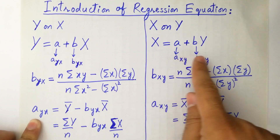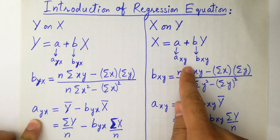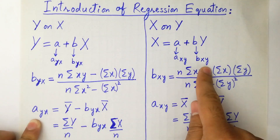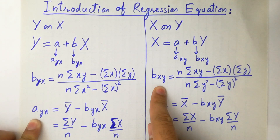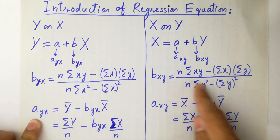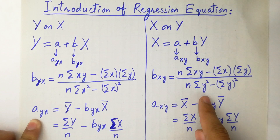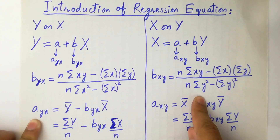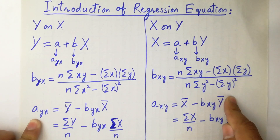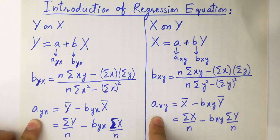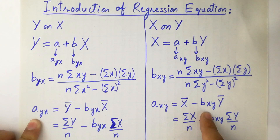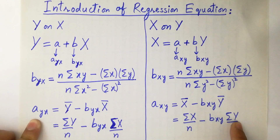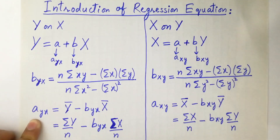For x on y, the regression equation is x = a_xy + b_xy·y. The formula for b_xy is: n·Σxy minus Σx·Σy, divided by n·Σy² minus (Σy)². And a_xy = x̄ minus b_xy·ȳ. Similarly, x̄ = Σx/n and ȳ = Σy/n. Remember these formulas for a and b in both y on x and x on y to easily calculate the regression equation.